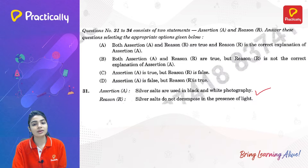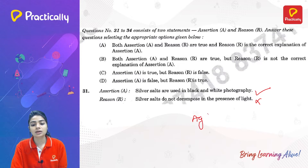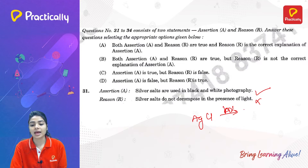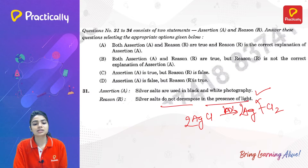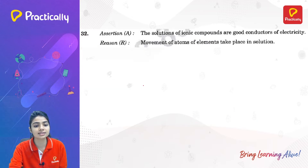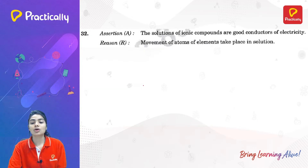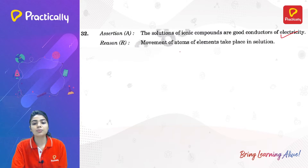Assertion-Reasoning: Assertion — silver salts are used in black-and-white photography — is correct. Reason — silver salts do not decompose in the presence of light — is false, because silver salts do decompose in the presence of light (hν) to form silver and chlorine gas. Since assertion is true but reason is false, option C is the correct answer.